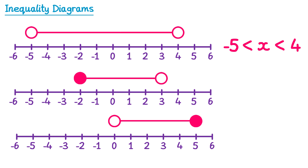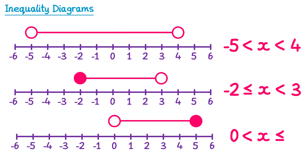Let's try the next one. We write down x. The circle on the left is shaded, so we write a less than or equal to symbol. The circle on the right is unshaded, so we write a regular less than to the right. Then we put on the numbers: negative 2 on the left and 3 on the right. For the final question: the circle on the left is unshaded, so we write a less than. The circle on the right is shaded, so we write less than or equal to. The number on the left is 0 and the number on the right is 5.